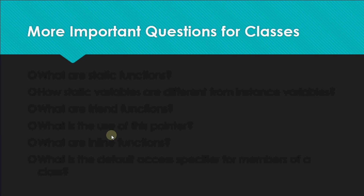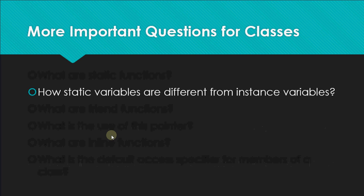Here are a few more questions you should prepare regarding classes. One could be: what are static variables and how are they different from instance variables? When you define a class and define data members, those normal data members are called instance variables because an object is defined as an instance of a class. For example, if I have a class Student with int rollNumber and char name[20],